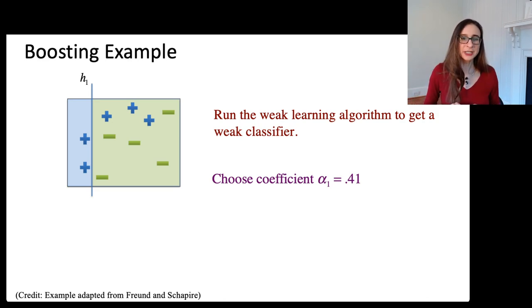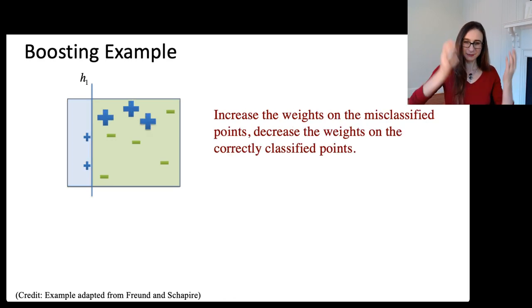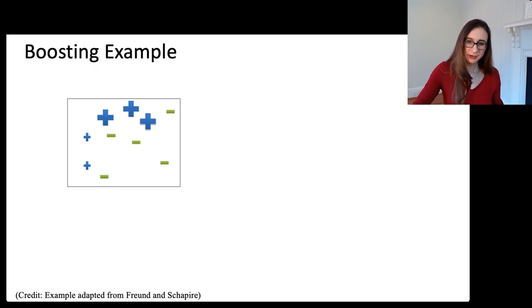We're going to upweight those three positives at the top that are misclassified, and then downweight everybody else. Before we do that, we're going to choose a coefficient for our final combined classifier. And that coefficient happened to be 0.41, and I'll tell you how we get that. We're going to upweight the misclassified positives and downweight everybody else. Increase the weights on the misclassified points, decrease the weights on the correctly classified points.